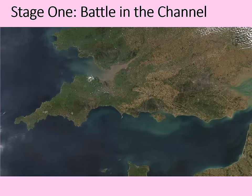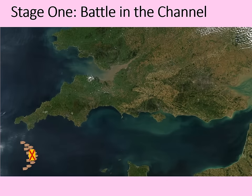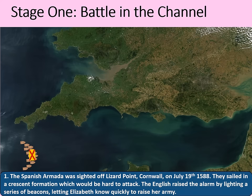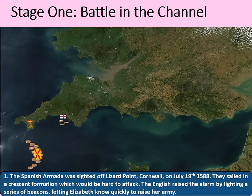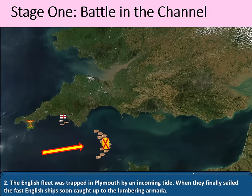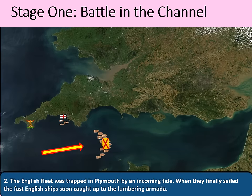Stage one of three is the battle in the English Channel. The Armada approached in a crescent formation and was sighted off Lizard Point, Cornwall, on July 19th, 1588. The crescent formation would be hard to attack, because if the English came up behind, the Spanish could surround and board them. The English raised the alarm by lighting a series of beacons, letting Elizabeth know to raise her army and prepare for an invasion. The Armada then sailed further up the Channel past the waiting English fleet at Plymouth — though the English fleet was trapped in Plymouth by an incoming tide.